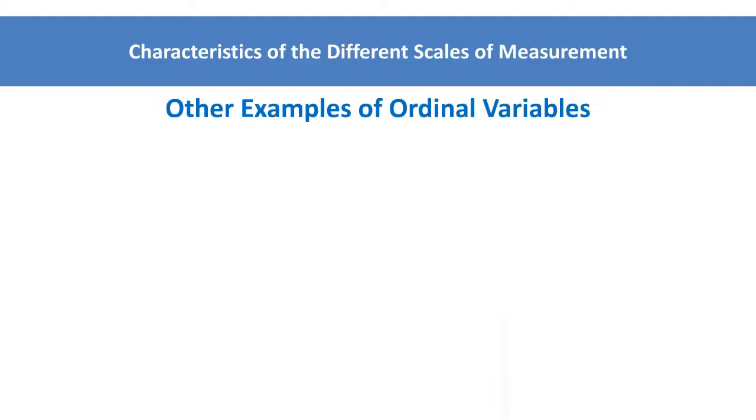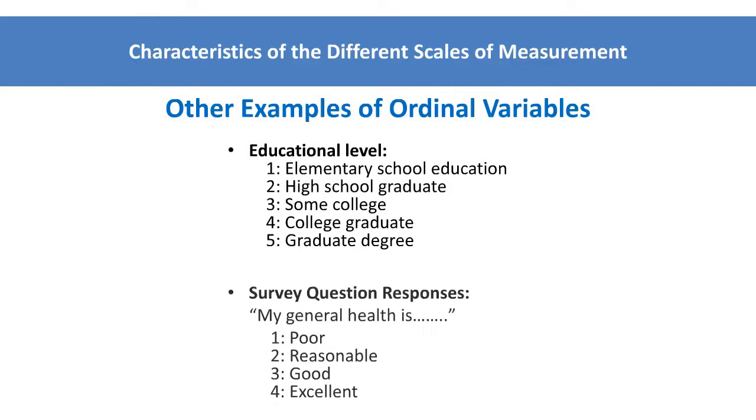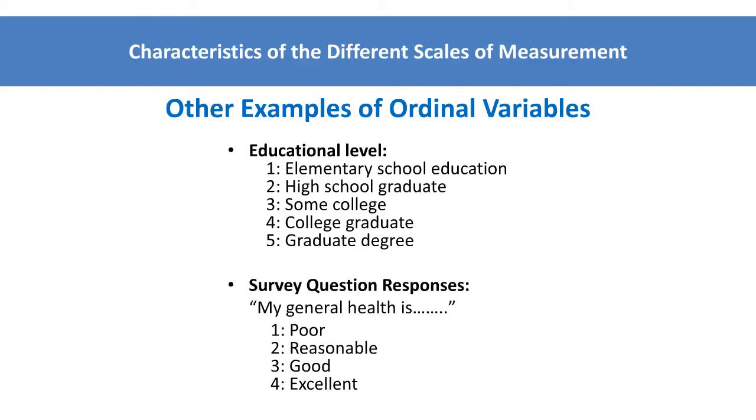Other examples of ordinal variables include education level and some survey question responses. The categories for each of these ordinal variables show order, but not the magnitude of difference between two adjacent points.